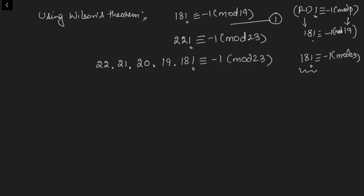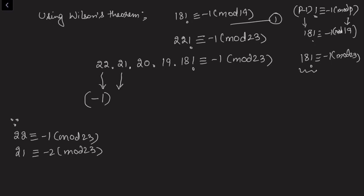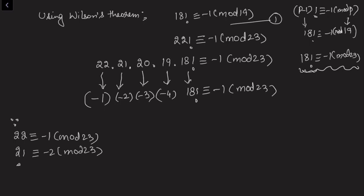Now we convert each factor using modular arithmetic: 22 ≡ -1 (mod 23), so replace 22 with -1. Similarly, 21 ≡ -2 (mod 23), replace with -2. Then 20 ≡ -3 (mod 23), replace with -3. And 19 ≡ -4 (mod 23), replace with -4. We keep 18! as is since that is the result we want.